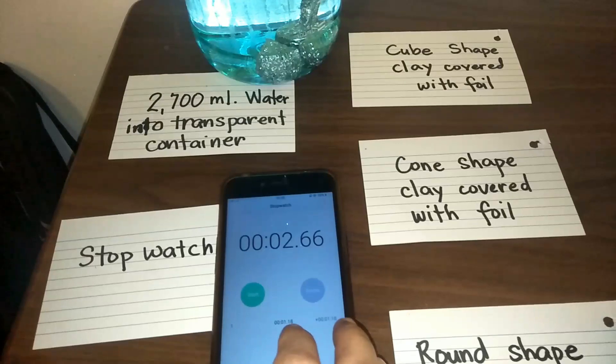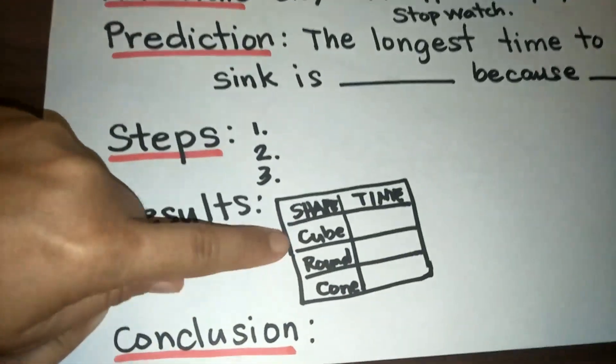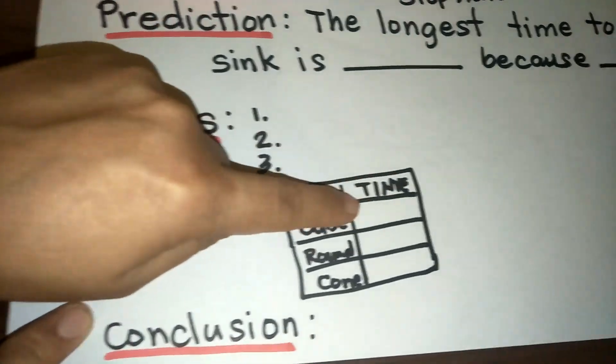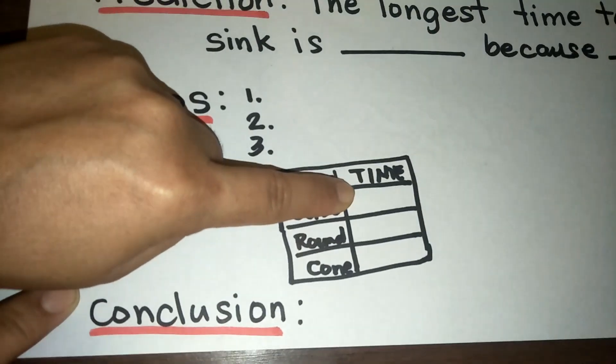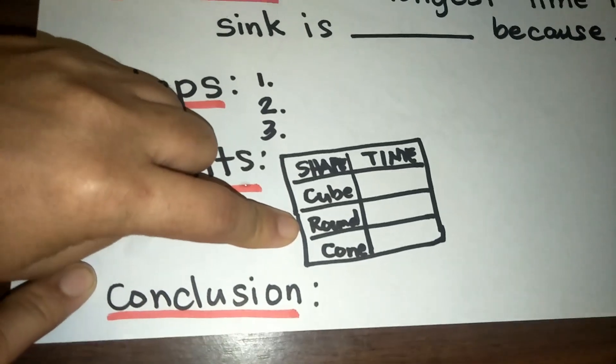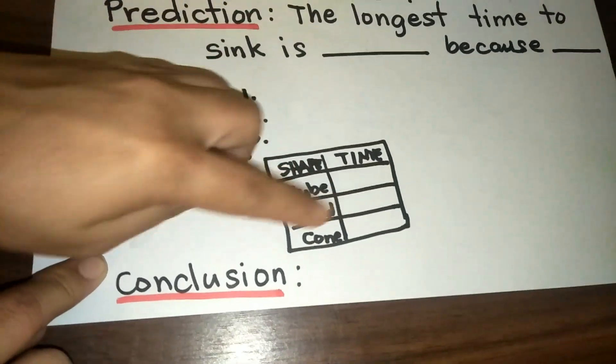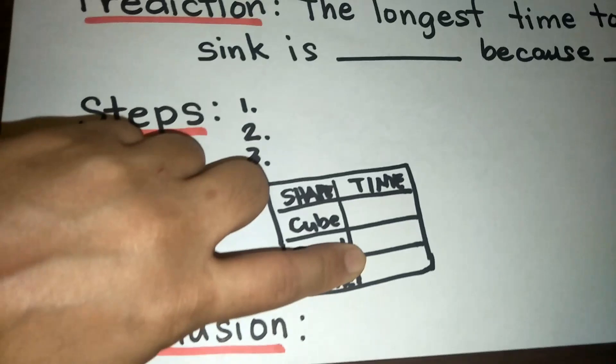Don't forget to record the time. Write the result. For the shape, the cube, write the time. For the round shape, write the time. And cone shape, write the time.